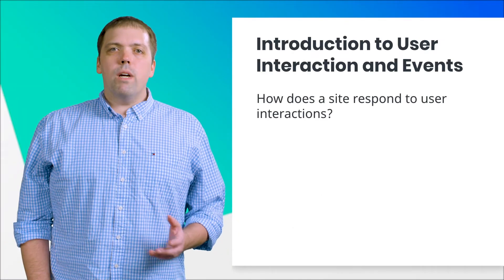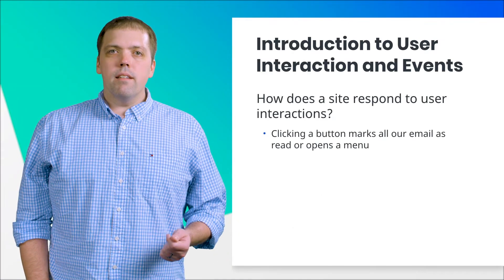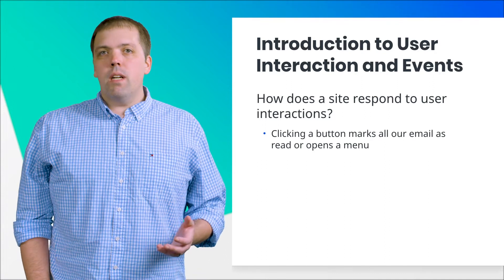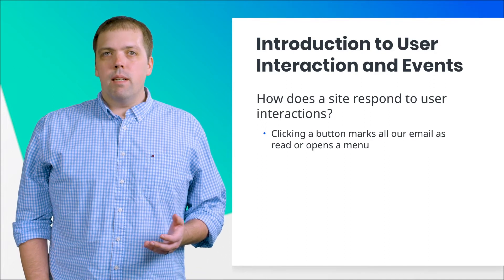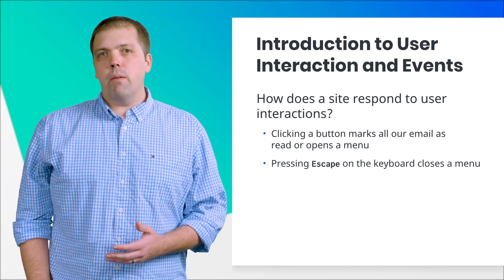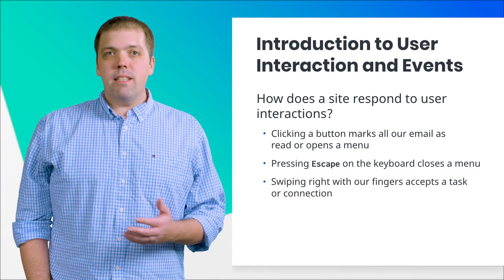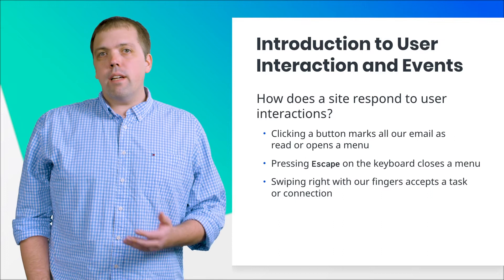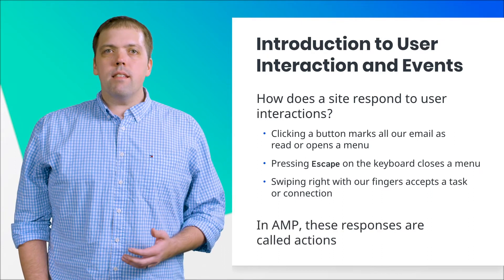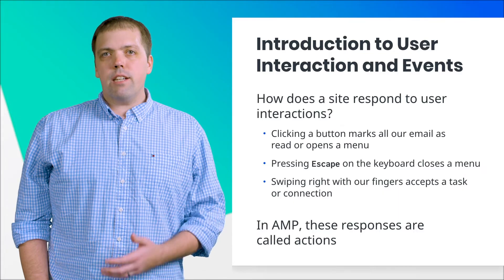How does a website respond to these user events? Clicking a button might mark all of our email as read, or it might open a menu. Pressing Escape on the keyboard might close that menu. Swiping right with our fingers might accept a task or a connection. In AMP, the responses a site makes to these user interactions are called actions.